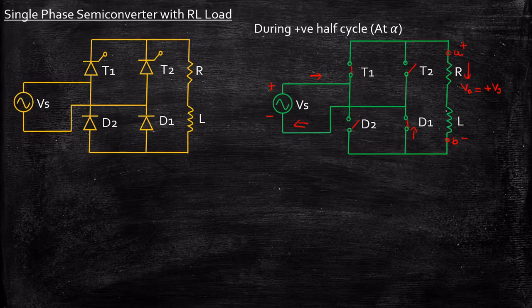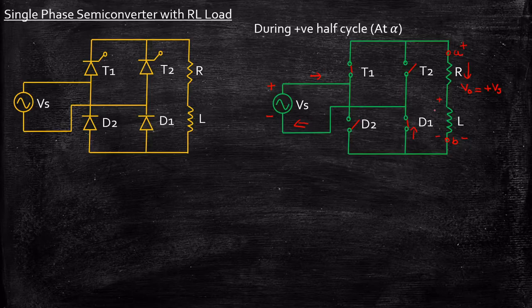A key point to observe here is that the inductor is slowly charging and the current through the inductor is increasing linearly. The inductor starts charging with a polarity plus and minus, current starts flowing through it, and a magnetic field is developed across the inductor during this phase.